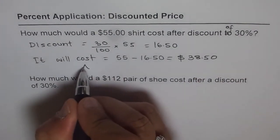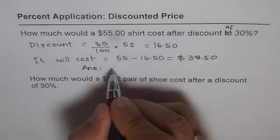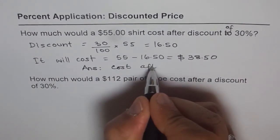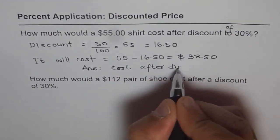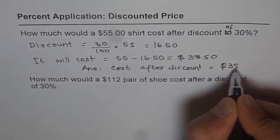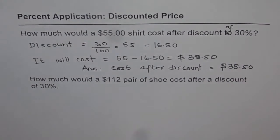We can write down our answer: cost of the shirt, cost after discount equals $38.50.